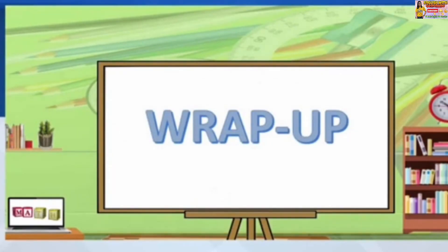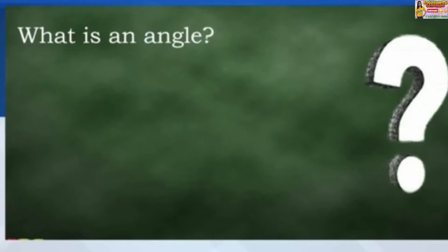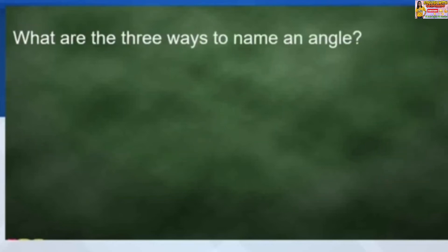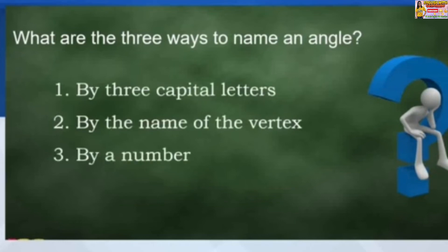To sum up the lesson, don't forget the important key points. What is an angle? An angle is formed by two non-collinear rays from the same point. What are the three ways to name an angle? By three capital letters, by the name of the vertex, by a number.